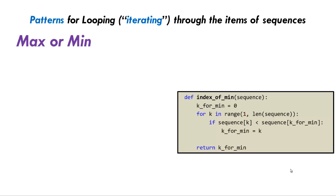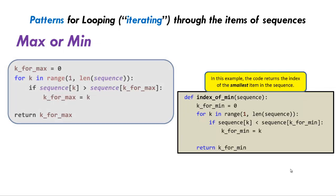Here's our last example — the max or min pattern, which can be used for either one. Here's the code for max, with a similar one for min. You start out with an index k_for_max set to zero. You loop from index one through to the end, and if sequence k is bigger than sequence of our max index, then max index becomes k. So as we go through, if the current item is bigger than the biggest we've found so far, the position of the biggest becomes the current position. At the end, we return the place of the biggest. The code for min uses a less than instead of greater than — run through a concrete example yourself to convince yourself that this code is correct.